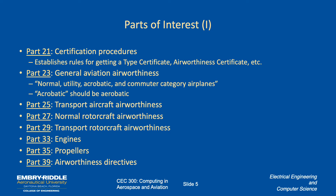Part 25 has to do with transport category aircraft — your 707s, 747s, and 787s. Part 27 is normal rotorcraft, like little Robinsons. Part 29 covers larger transport category rotorcraft, largely repurposed from original military designs — big cargo lifting cranes and things like putting air conditioning units on top of skyscrapers. Part 33 is engines, Part 35 is props, and Part 39 has to do with airworthiness directives and how they're issued.